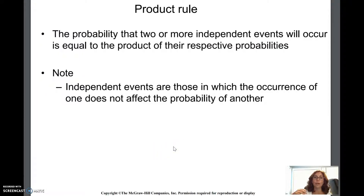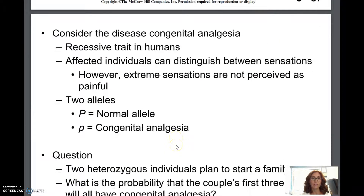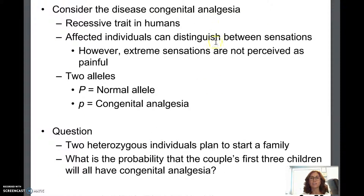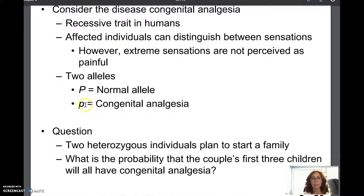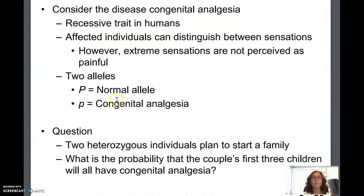The product rule is a bit more straightforward. This is where you have two or more independent events occurring. A good example is congenital analgesia, where people are not able to feel pain. The normal allele is big P, and congenital analgesia is little p — it's a recessive trait.